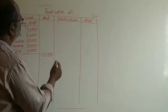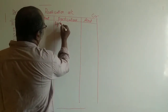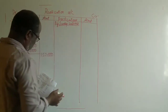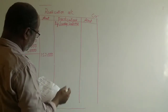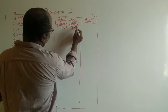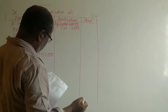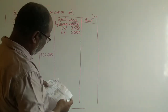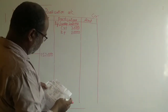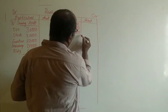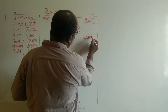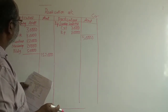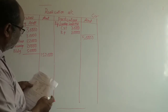Now let's take sundry liabilities on the credit side. You are supposed to consider only outside liabilities, not internal liabilities like partners' loans. So first is creditors 30,000, and bills payable is 20,000. Shreya's loan is there, but Shreya is a partner, so it is considered an internal liability and should not be included. Sundry assets total is 1,52,000 and sundry liabilities total is 50,000.